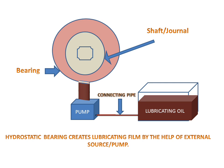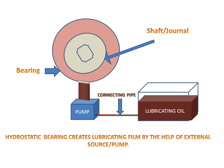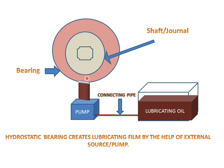The shaft will rotate after making a lubricating oil film between the bearing and journal. This gap is created by the external source, meaning by the pump, and lubricating oil is supplied by the pump externally. So hydrostatic bearing and hydrodynamic bearing are different in this way.